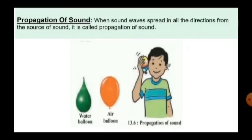We notice that sound travels in the form of waves through air, water, or through a solid and reaches our ears. Sound is propagated more clearly through a liquid than through air, and it is heard most clearly through a solid. This is because transmission of sound occurs at different speeds in different mediums — faster through a liquid than through a gas, and faster through a solid than through a liquid.